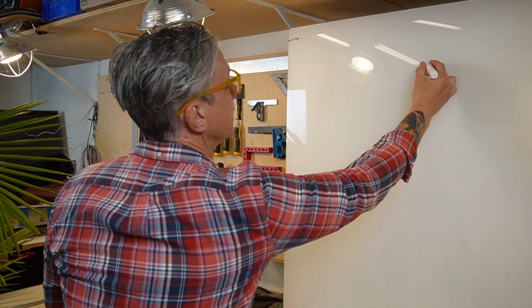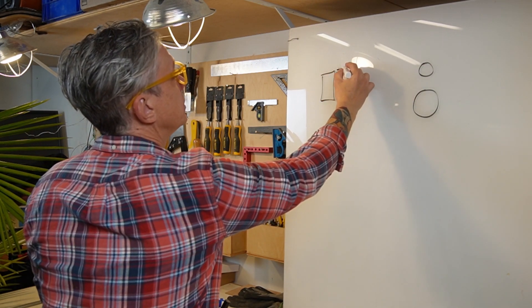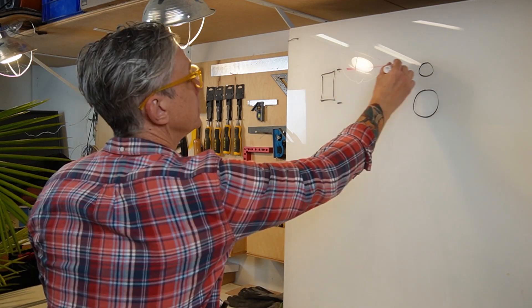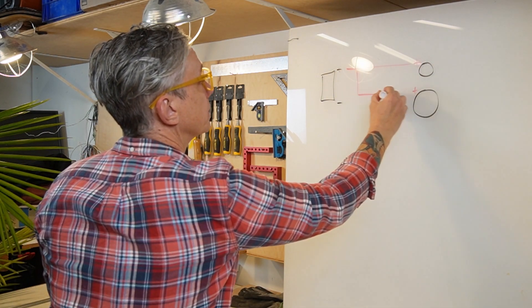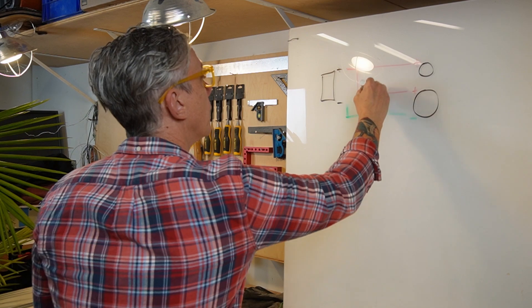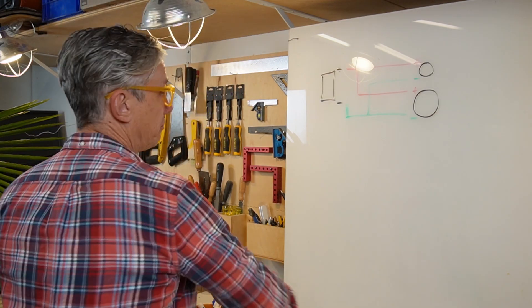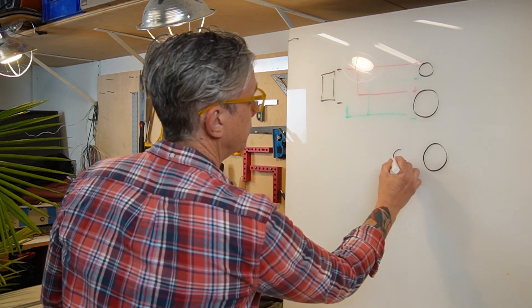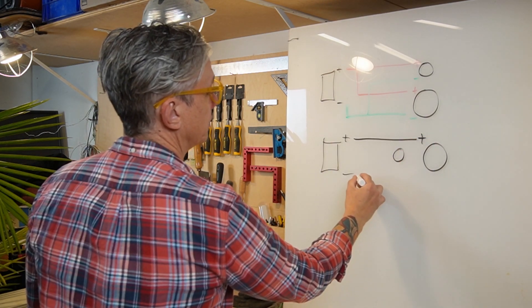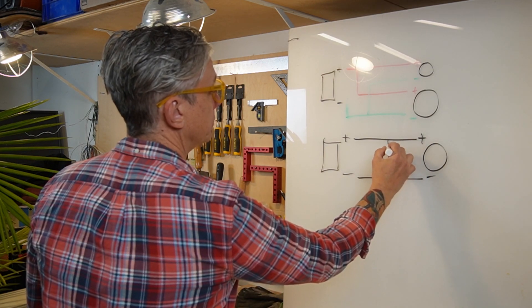Let's talk about series and parallel connections. Let's say we have a tweeter and a woofer and we want to connect them to an amplifier. Positive goes to the positive of the tweeter and positive of the woofer; negative goes to the negative of the woofer and then to the negative of the tweeter. This is a parallel connection. Another way to illustrate that: one driver here, another driver here, and an amplifier — positive to positive, negative to negative, connecting both drivers the same way.